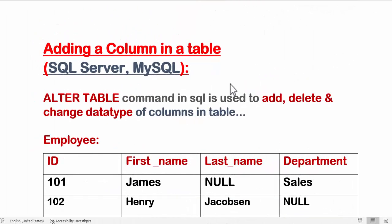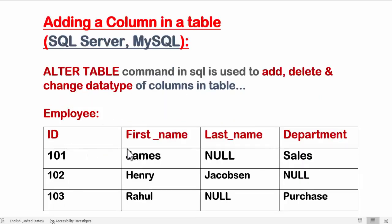Here we are going to discuss adding a column in a table. The ALTER TABLE command in SQL is used to add, delete, and change the data type of columns in SQL Server and MySQL tables. Here I have an employee table and it has four columns: ID, first name, last name, and department. I want to add an address column.